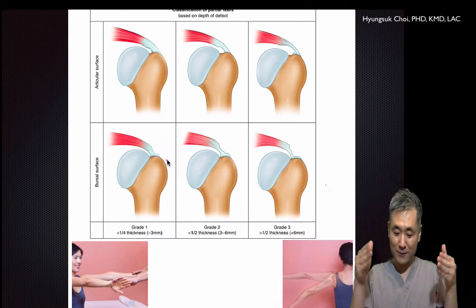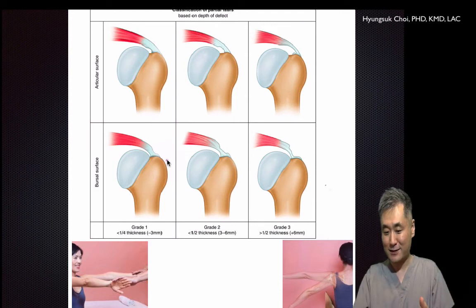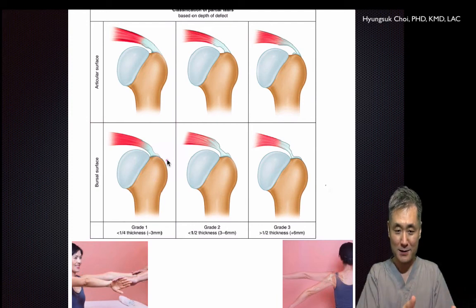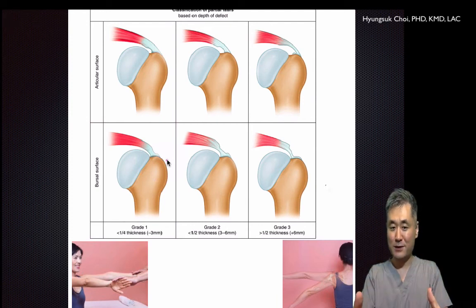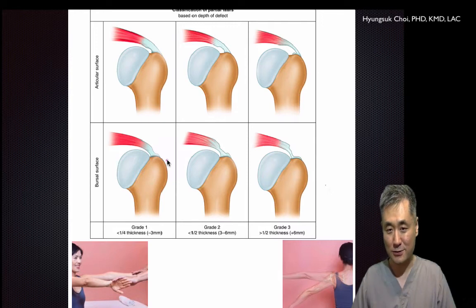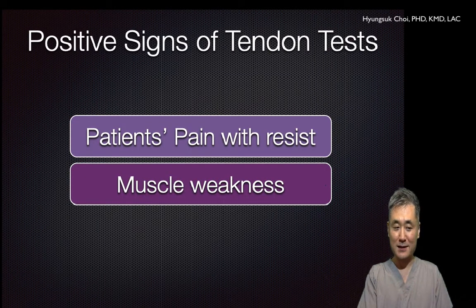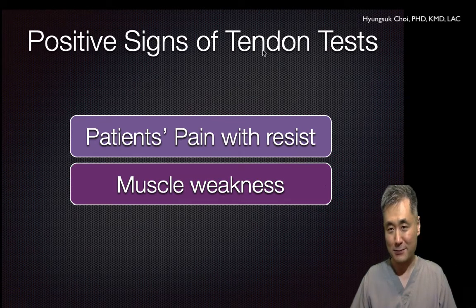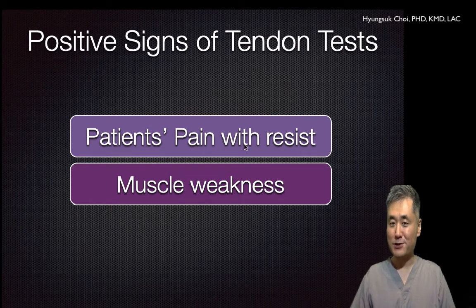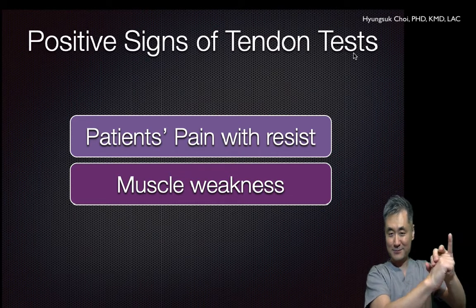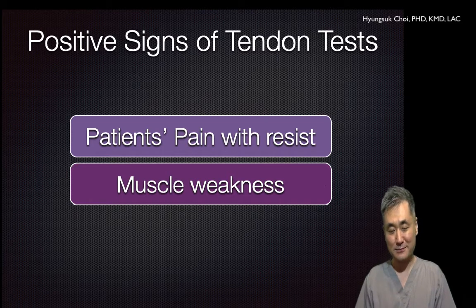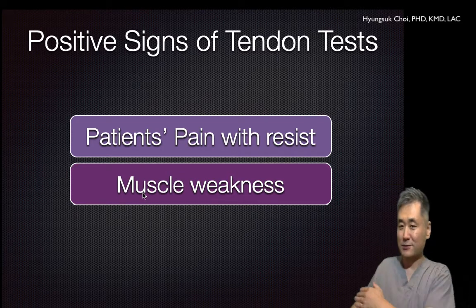When you have a hypothesis, you can confirm it. If it doesn't work, you think about another hypothesis and try it with a different test — that is how it goes. The positive sign of a ligament test is instability, pain, and altered end feeling. The positive sign of a tendon test is pain, especially with resistance — that is positive for all tendon tests like golfer's elbow or jumper's knee test — and also muscle weakness like the drop arm test.